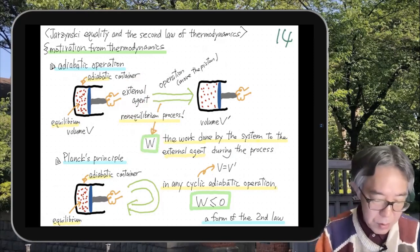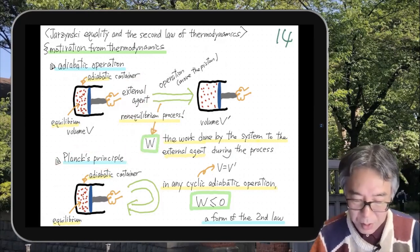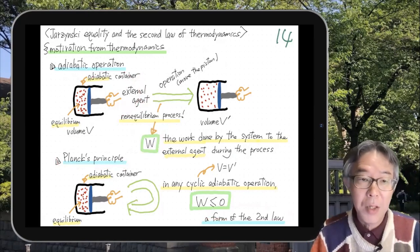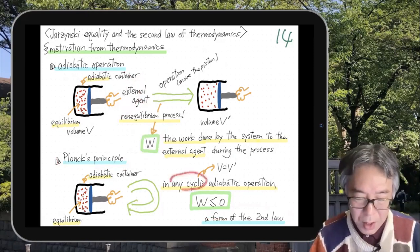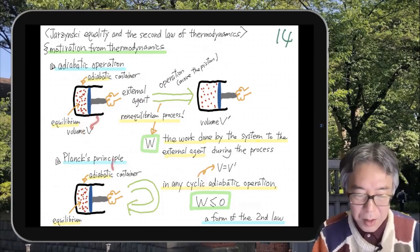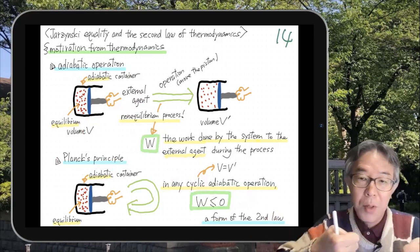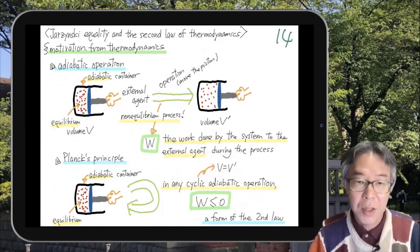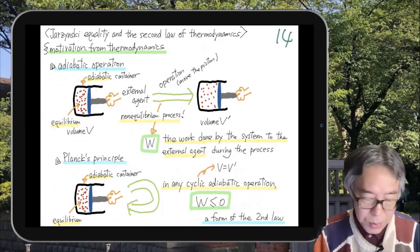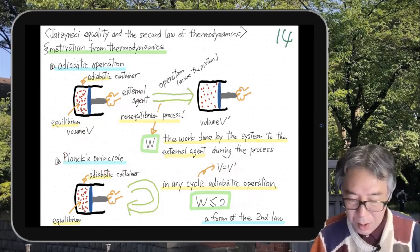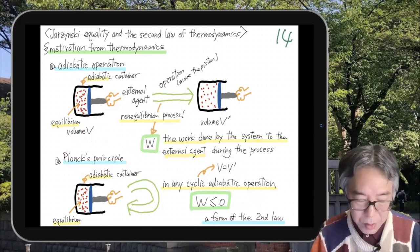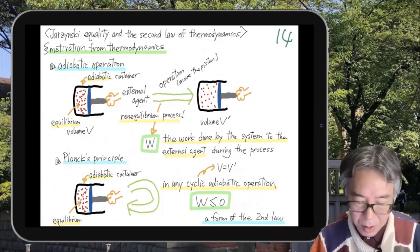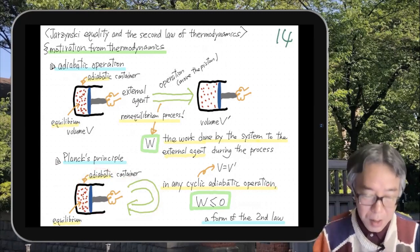I also want to remind you about one form of the second law of thermodynamics called Planck's principle. Taking the same setting and considering an adiabatic but cyclic operation: you start from volume V, pull the piston, push it back, but finally you have to return to the same volume — that's a cyclic adiabatic operation. Planck's principle says that the work W done by the system to the outside world in a cyclic adiabatic operation is non-positive. You cannot extract positive work by doing a cyclic adiabatic operation.